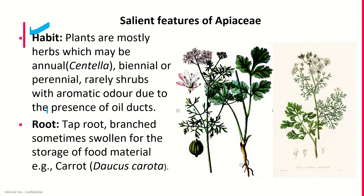In Echinophora, each umbel has a central female flower surrounded by male flowers at the periphery. In Arctopus and Aciphylla, the flowers are fully dioecious in nature. In Astrantia, an intermediate condition is observed.